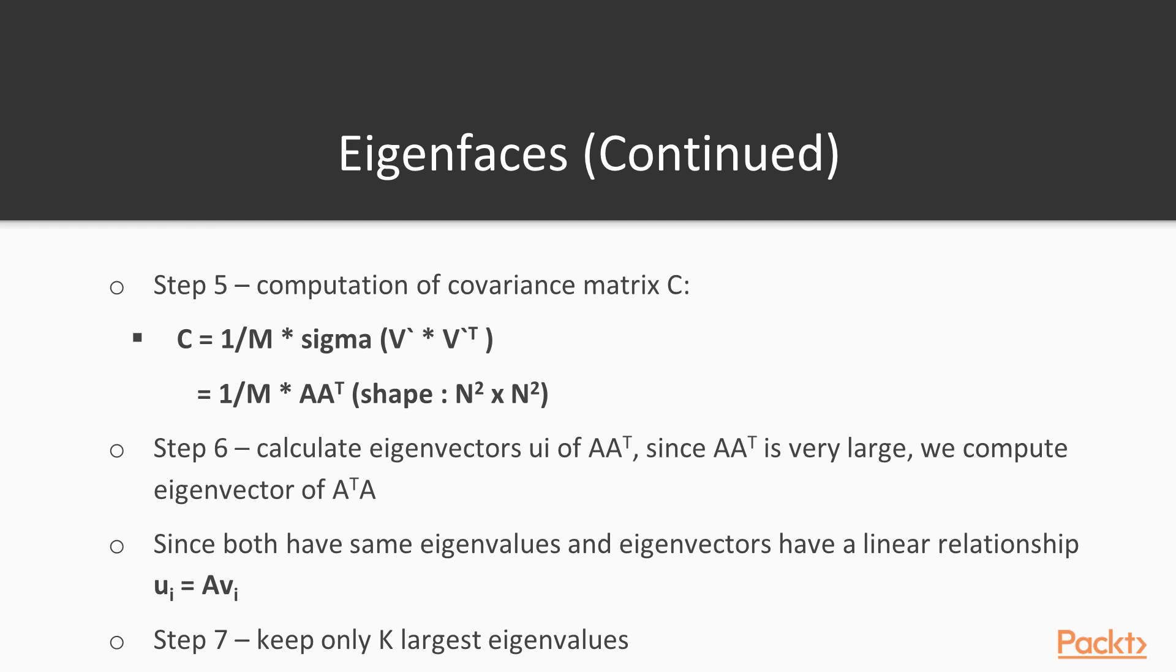Then we find the eigenvalues and eigenvectors of the covariance matrix. Then we only keep the K largest eigenvalues, also known as the principal components.